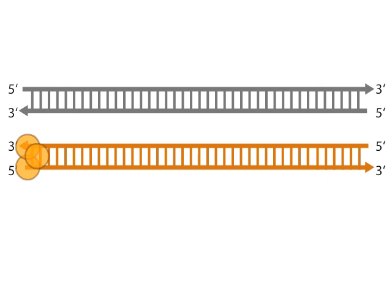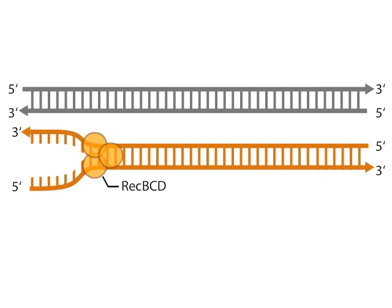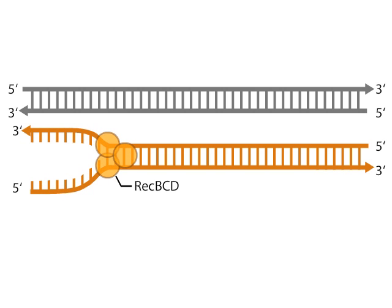An enzyme system called the REC-BCD complex initiates the series of events by binding to the end of a DNA fragment and beginning to unwind it. A specific eight-base sequence called a chi-site exists periodically in most DNA sequences and serves as a recombinational hotspot. REC-BCD unwinds the DNA until it reaches such a site.